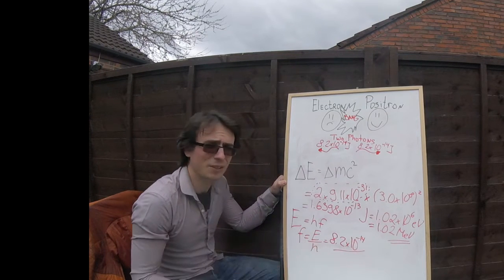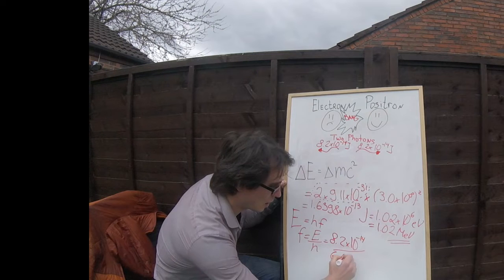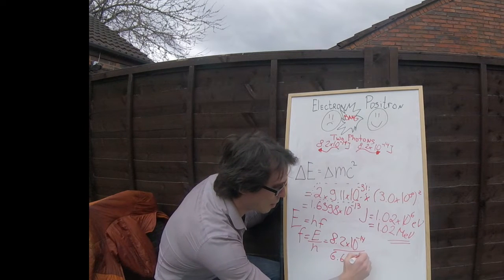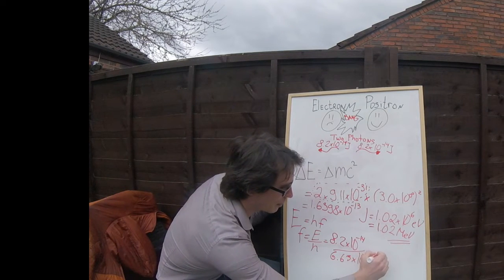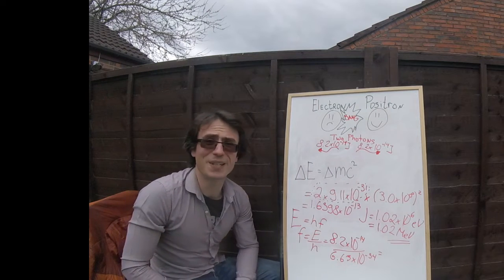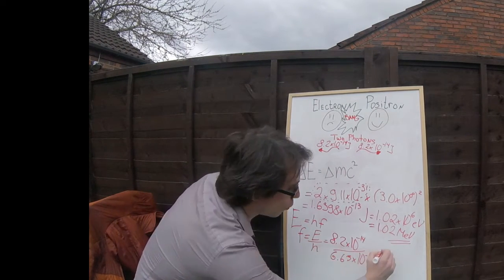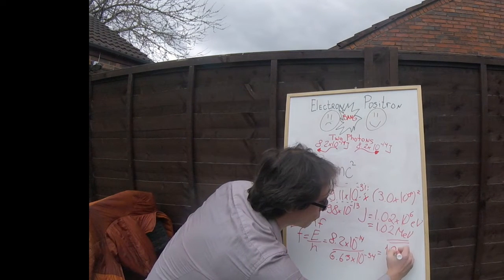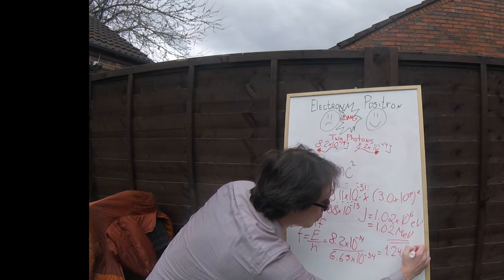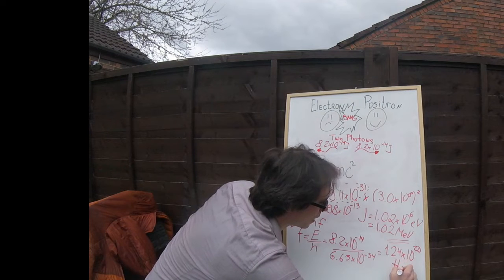Dividing by Planck's constant, 6.63 times 10 to the power of minus 34, we're going to get a very large frequency and that will be about 1.24 times 10 to the 20 hertz.